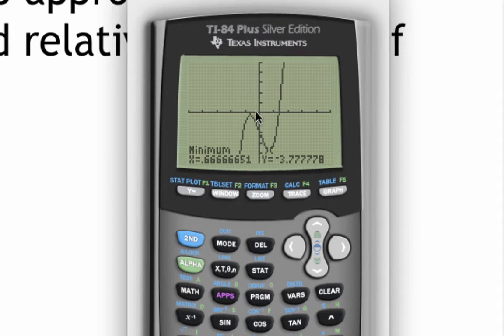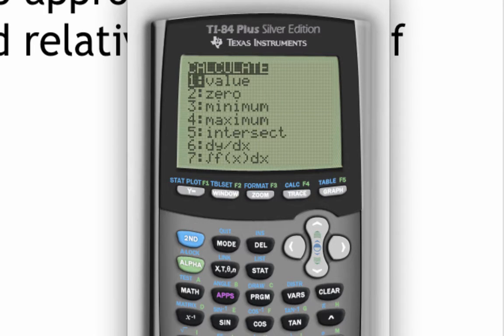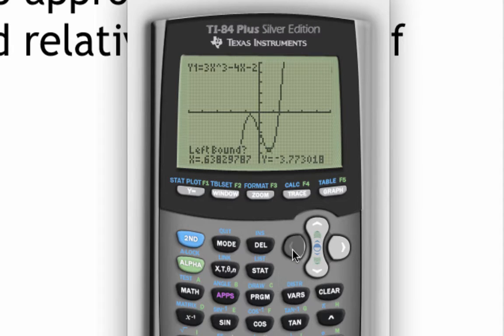We're going to do the same thing to find this relative maximum value up here. So I'm going to go second, trace again, but this time I'm going to select the maximum key. So again, we have to arrow over to the left past the maximum, so we're focusing on this thing. Hit enter, right bound point. So arrow over to the right past that value. Hit enter. Again, it lets you take a guess, but you don't have to. Hit enter again, and it'll spit out that relative maximum value.